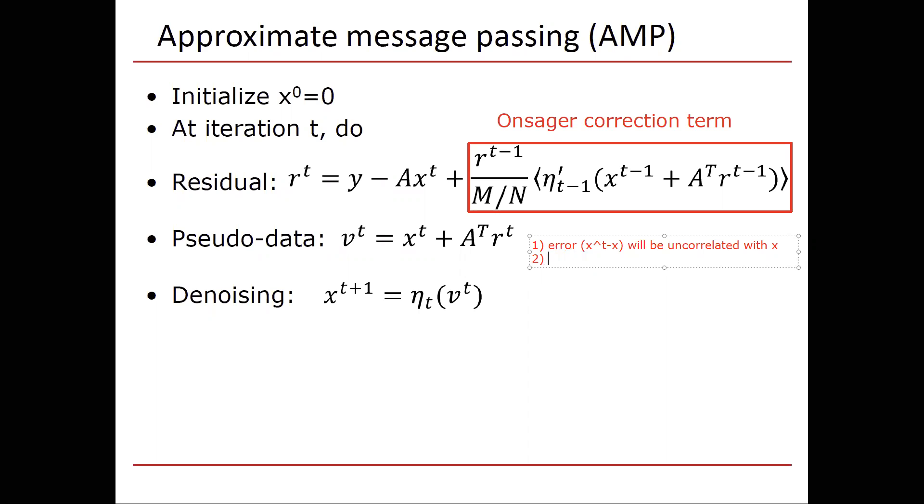The second comment is that the error will be Gaussian. So what I'm saying is without the Onsager term, after a few iterations, the error will quickly be correlated with x. And that would mean that the denoiser barely works. That also means that you converge very, very slowly without an Onsager term to something reasonable. With the Onsager term, things converge much more quickly.